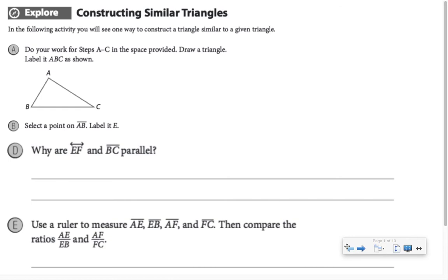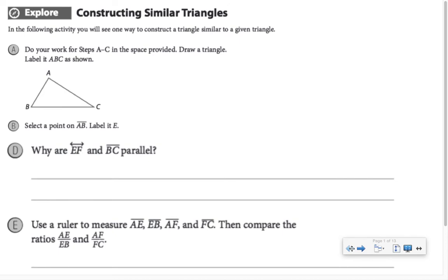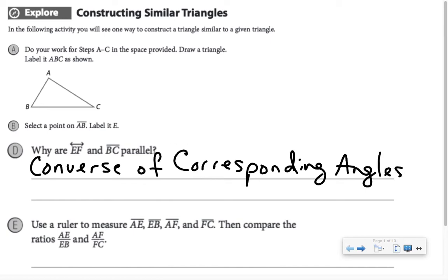The first question asks why EF and BC are parallel. If you look at the arcs in the construction, I made angle AEF congruent to angle B. Well, angle AEF and angle B are corresponding angles, so I'm using the converse of the corresponding angles theorem.